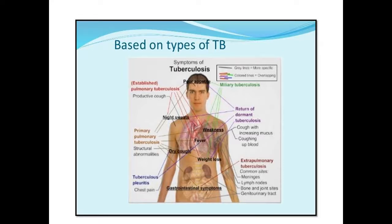Based on the type of TB, the symptoms of Tuberculosis can also be summarized as follows. If a person has pulmonary tuberculosis, the person will experience productive cough, poor appetite, night sweats, fever, weakness, and weight loss.